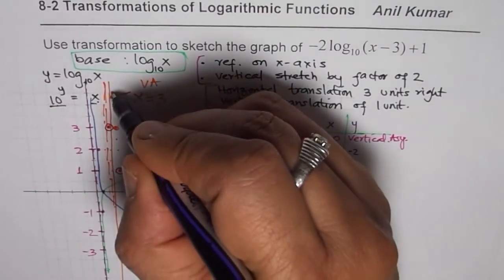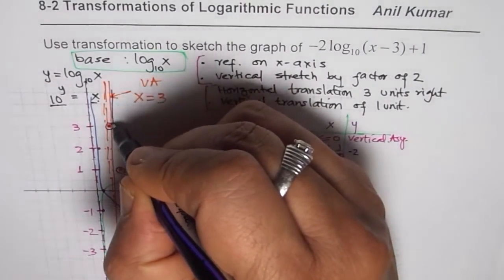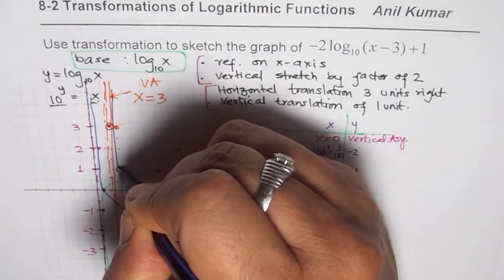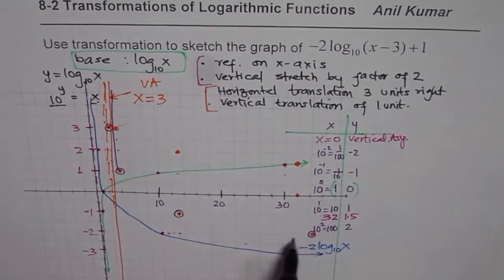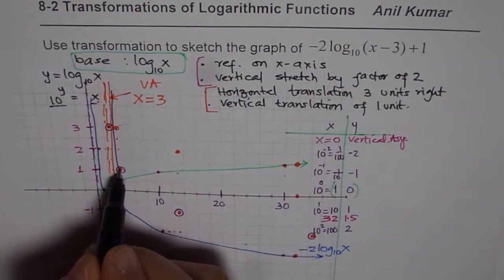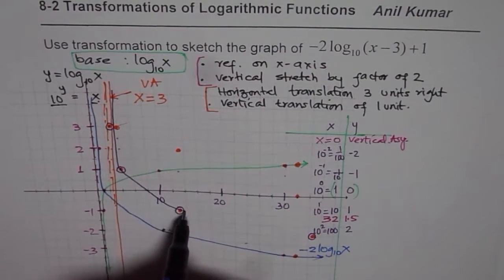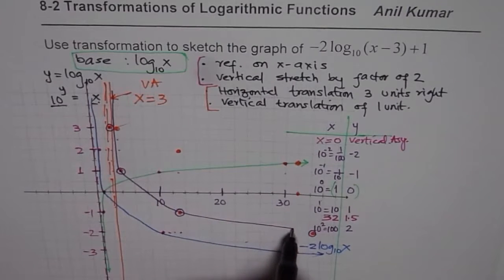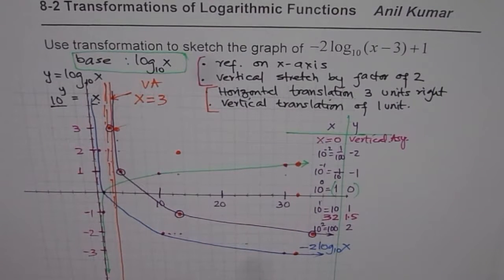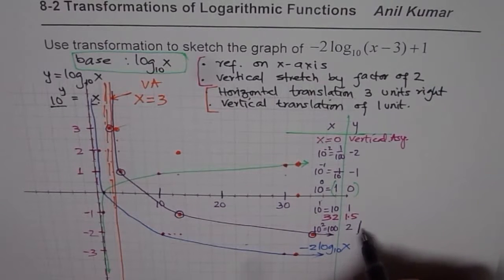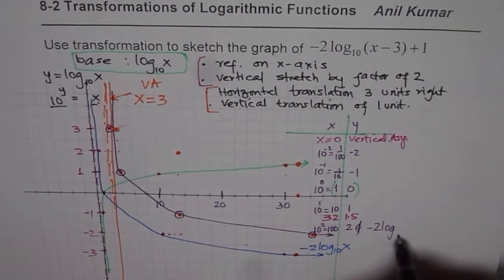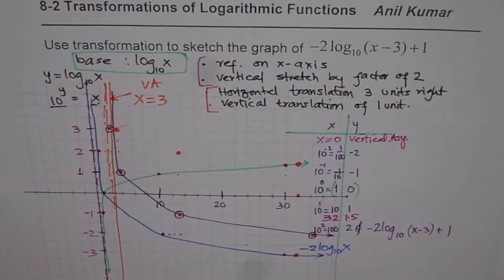Now we sketch the final graph. The graph is very close to this vertical asymptote at x equals 3, and we take care of the transformed points to draw the curve. The result is the graph of minus 2 log to the base 10 of x minus 3, plus 1.